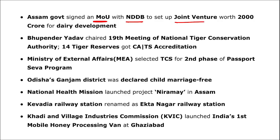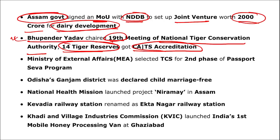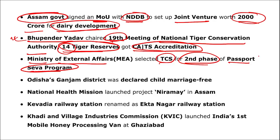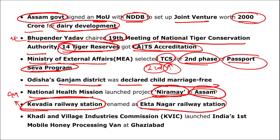Bhupendra Yadav chaired the 19th meeting of the National Tiger Conservation Authority — 14 tiger conservation reserves received the CA|TS accreditation. The Ministry of External Affairs selected TCS for the second phase of the Passport Seva Programme. Odisha's Ganjam district was declared child marriage-free. Kevadiya railway station was renamed Ekta Nagar railway station — it is in Gujarat and leads to the Statue of Unity.